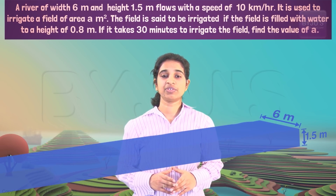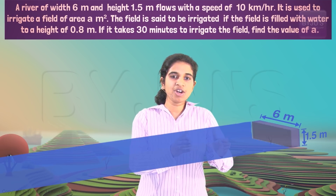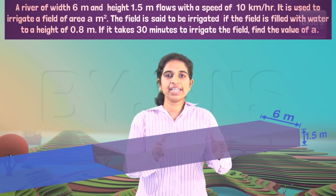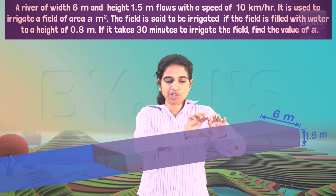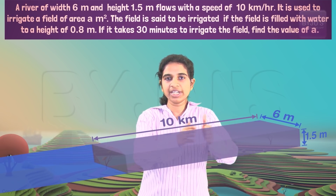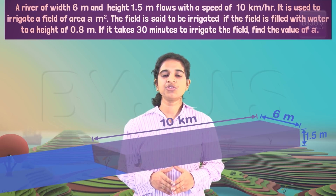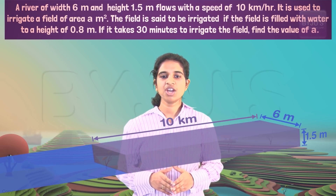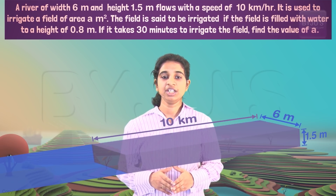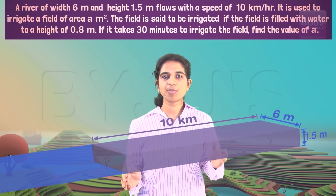What we do know is that the river goes 10 kilometers in one hour. So if we take a one-hour time period, the length would be 10 kilometers. However, we only need to irrigate the field in 30 minutes — half an hour. So in half an hour, how much will it cover?